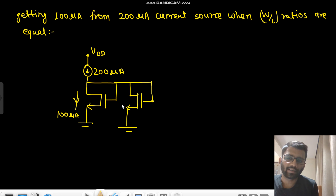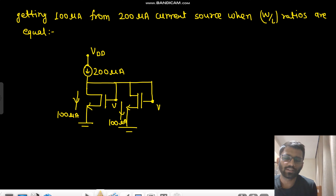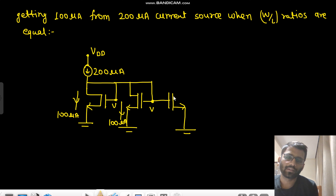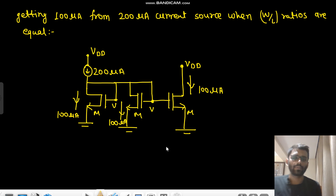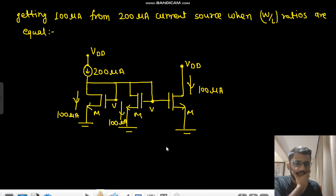So 100 micro ampere goes here and 100 micro ampere goes here, and it generates a voltage V. This voltage V is the same at both nodes. This V is fed to another transistor, giving an output of 100 micro ampere. Since W/L ratios of all transistors M are the same, the 200 micro ampere current is divided into two 100 micro ampere parts and the same is copied — that's it.